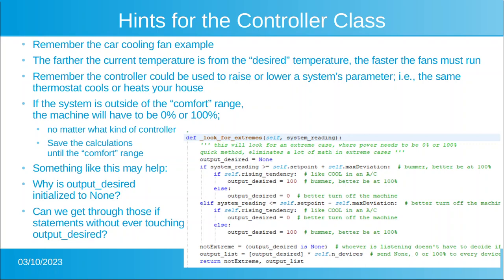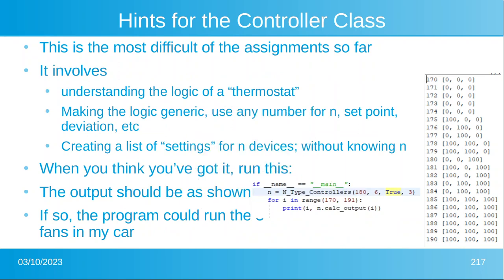Why is the variable output_desired initialized to None? Ask yourself: could we get through all those if-statements without ever setting output_desired? If so, when we hit the return statement, output_list requires output_desired — but it wouldn't know what output_desired is, and the program would crash. This is why we must explicitly initialize it. Finally, this is the most difficult assignment so far: it involves understanding the logic, making the logic generic, and creating a list of settings for n devices without even knowing what n is.